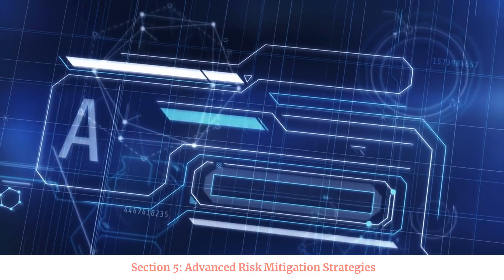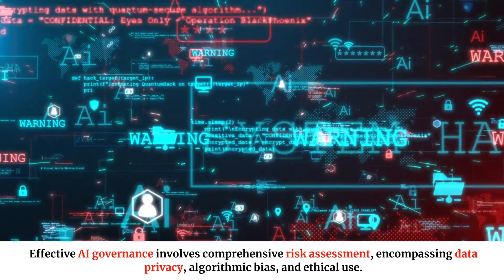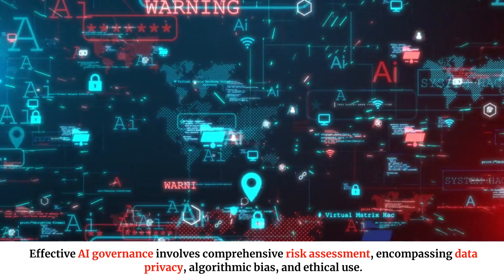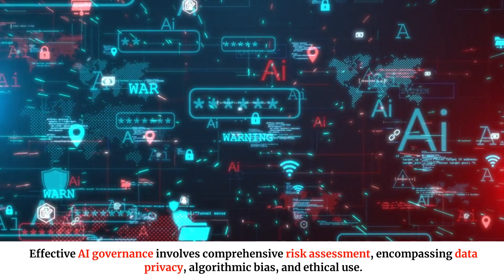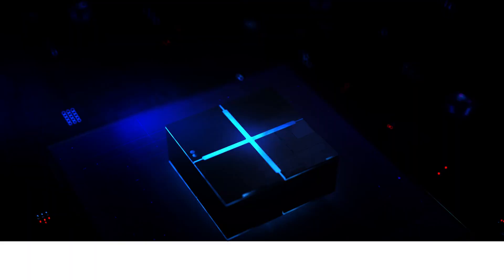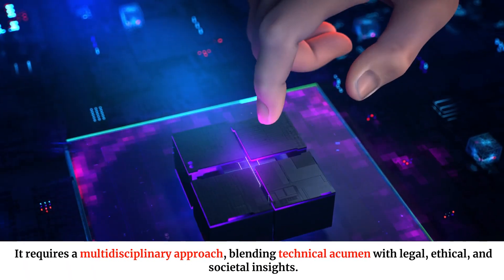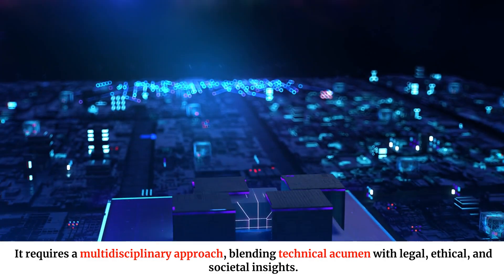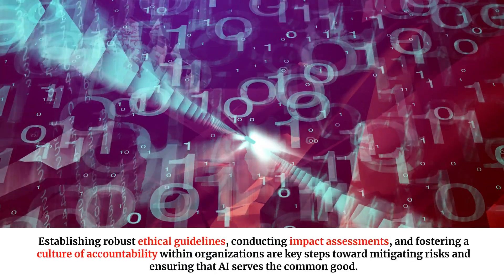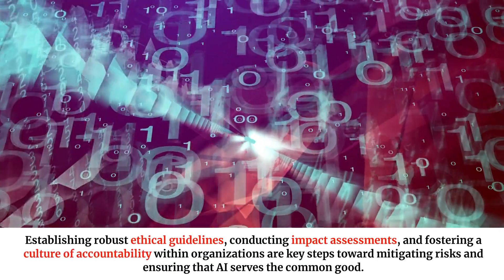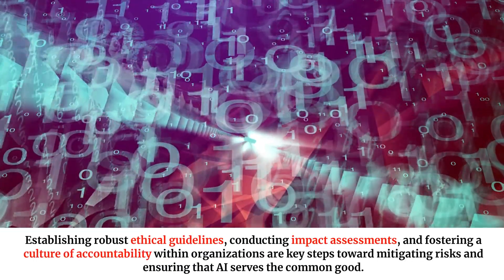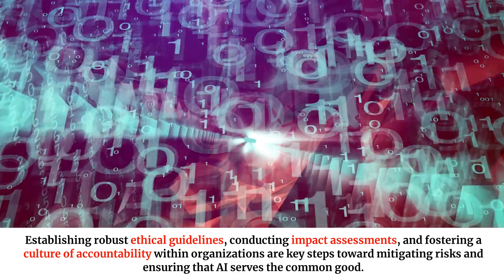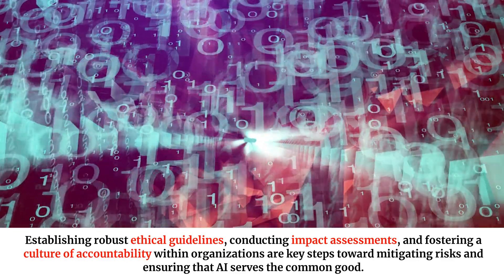Section 5: Advanced Risk Mitigation Strategies. Effective AI governance involves comprehensive risk assessment, encompassing data privacy, algorithmic bias, and ethical use. It requires a multidisciplinary approach, blending technical acumen with legal, ethical, and societal insights. Establishing robust ethical guidelines, conducting impact assessments, and fostering a culture of accountability within organizations are key steps toward mitigating risks and ensuring that AI serves the common good.